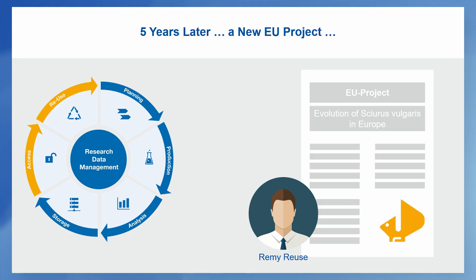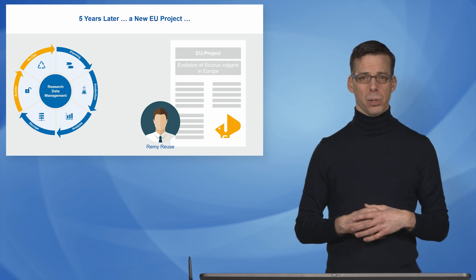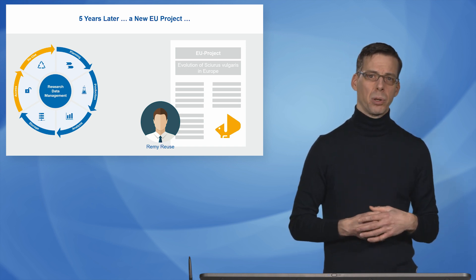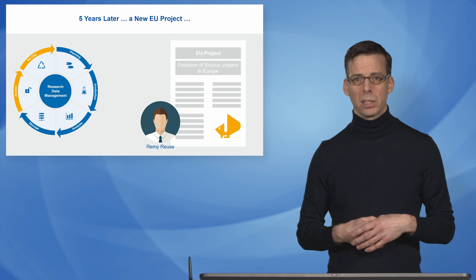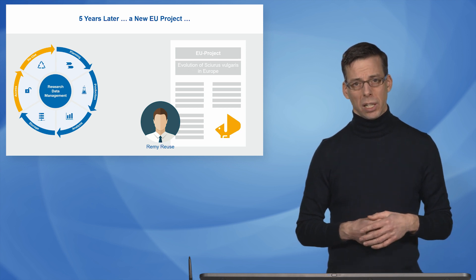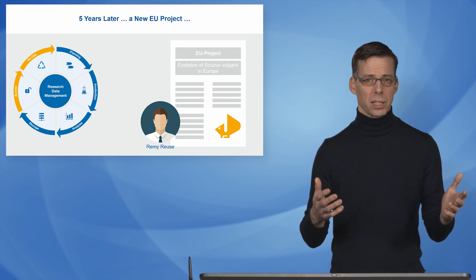Louise contacts the different institutes to find out what information is available. At Frank Forscher's institute, it turns out the USB stick was lost when the institute moved to a different location — no more data from there. On the other hand, someone at Rachel's institute remembered her lab book. They handed it over, and Remi is happy to find more details about the observation points and even some additional information on the size of the squirrels stored there.